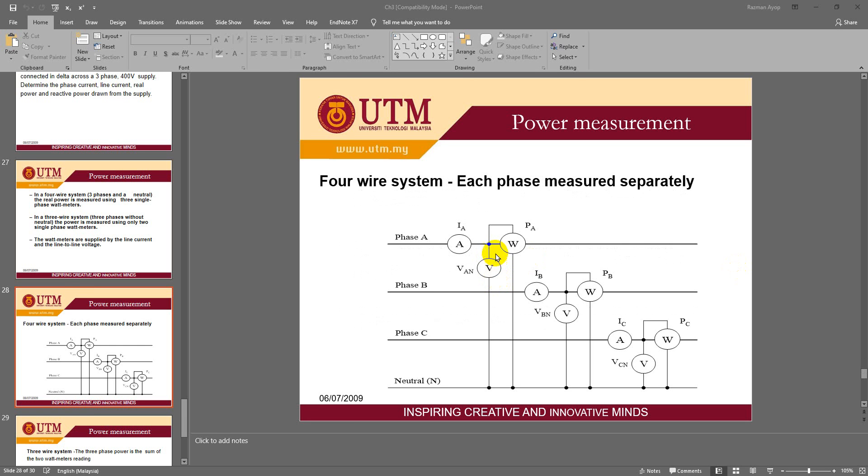For a four-wire system or star connection, you have a neutral wire. You have to find the voltage for each phase against neutral and multiply by the line current to get the power. But the problem is that the four-wire system is only available for star-star connection with neutral wire. Most connections don't have a neutral wire. Only star-star connection has a neutral wire.